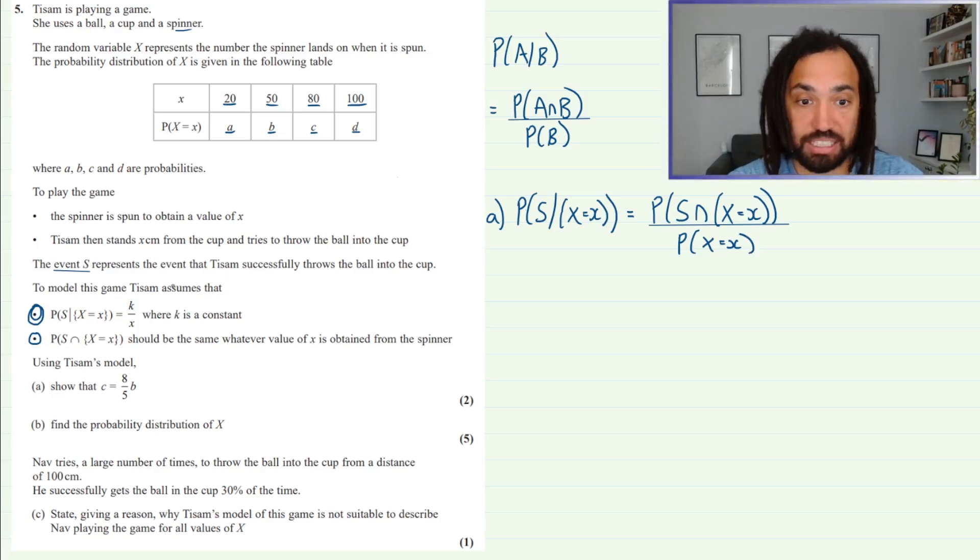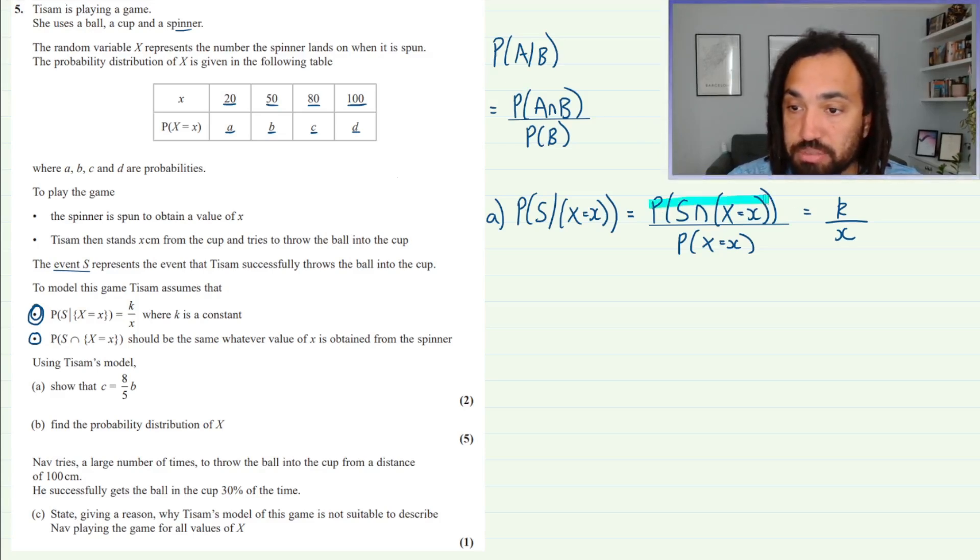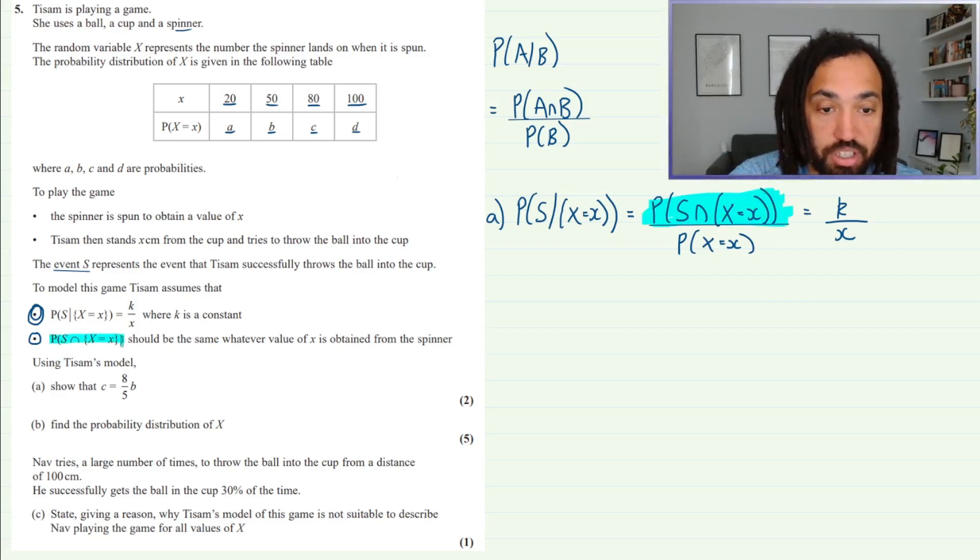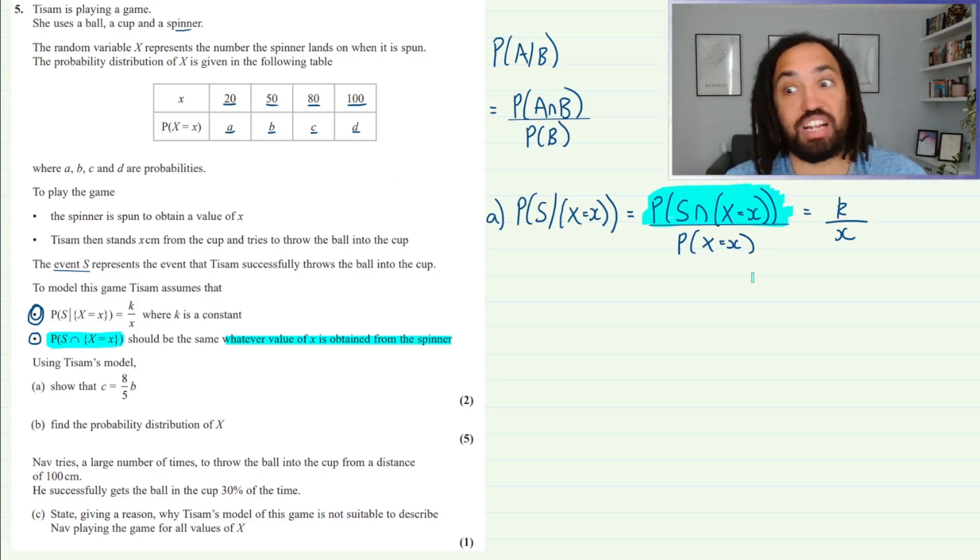Now that is equal to K over X we're told. Okay, perfect. Now this top line looks familiar because this top line here, this intersection probability, is in fact defined on the next bullet point. So what does it say? It says that it should be the same whatever value of X is obtained from the spinner. So this means that this blue intersection probability is going to remain constant no matter what value of X we get.